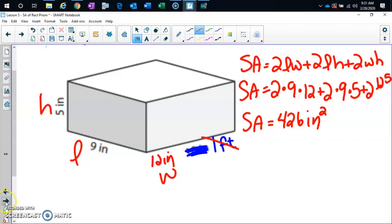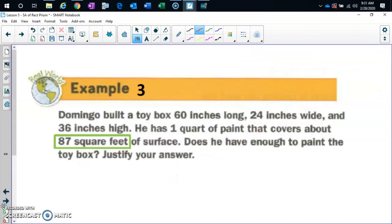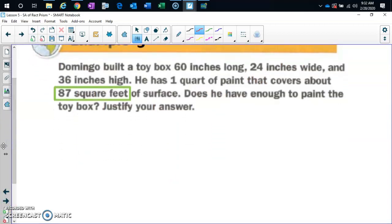All right. Here we go. Example 3. Domingo built a toy box that is 60 inches long, 24 inches wide, and 36 inches high. He has one quart of paint that covers about 87, look at this, square feet of surface. Does he have enough to paint the toy box? Justify your answer. Well, first thing you need to say to yourself is this. If you've got a toy box and you're painting the outside, what are you looking for? The what of the toy box? The surface area, right?